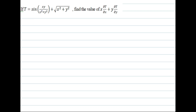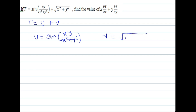The question is: t is equal to sin(xy / (x² + y²)) plus square root of x² + y². Find the value of x(∂t/∂x) + y(∂t/∂y). Now t is the addition of two different functions, so we consider t = u + v, where u = sin(xy / (x² + y²)) and v = √(x² + y²). To find the degree of both, we put x = xt and y = yt.